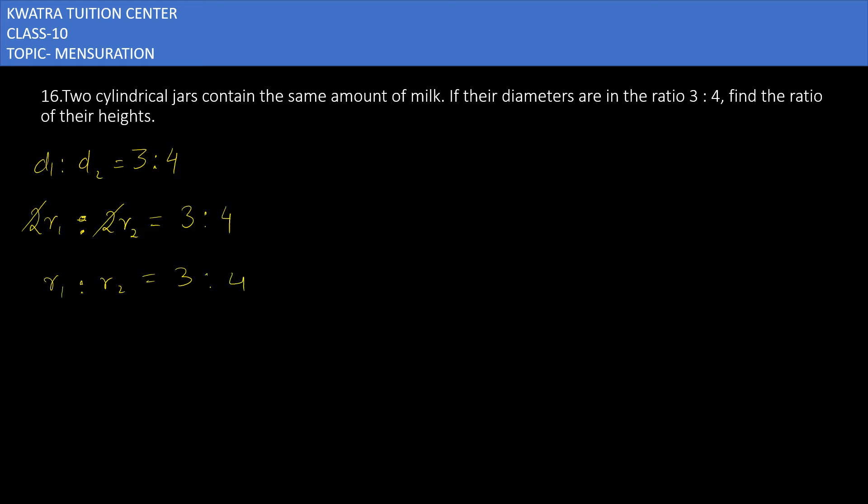The radius is now known for both. You have to find the ratio of their heights. So for that, take the volume of both. It will be: